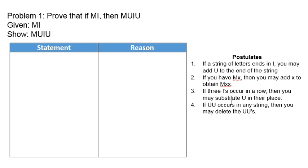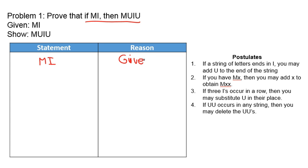So let's use this MIU axiomatic system to prove a statement. The statement we're going to try to prove is: if MI is true, then MUIU is true. And we're going to prove that directly. Proving it directly means we're going to assume the hypothesis MI is true, and through a series of deductions — with the reasons for those deductions — we're going to wind up showing that MUIU is true. So our first statement is MI, the hypothesis. The reason for that is it's given to us — we're assuming it to be true.